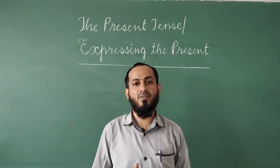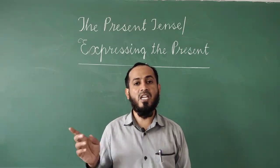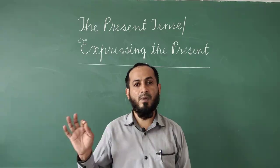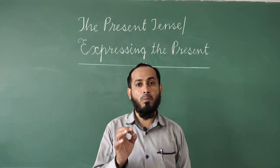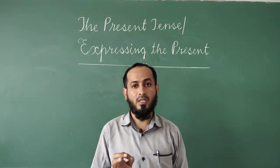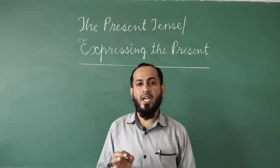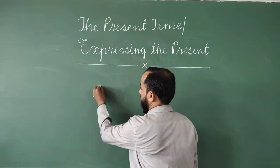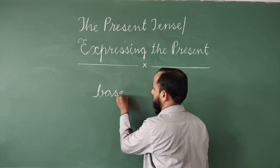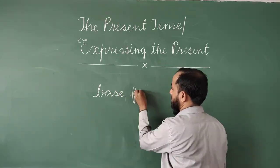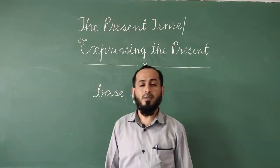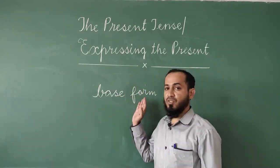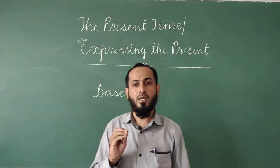Or we can say V1, V2, V3, V4 — where V4 is the V1 plus ing form. And one more thing: the first form of the verb, verb 1, is also known as the base form of the verb.